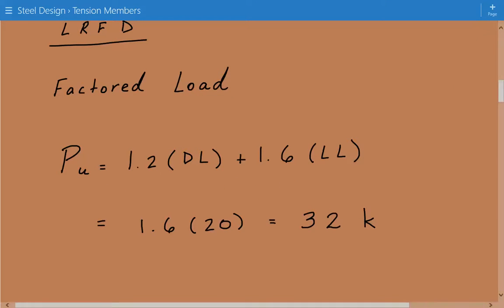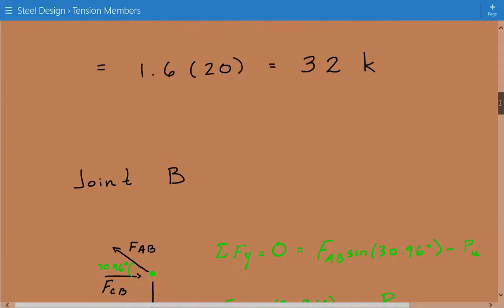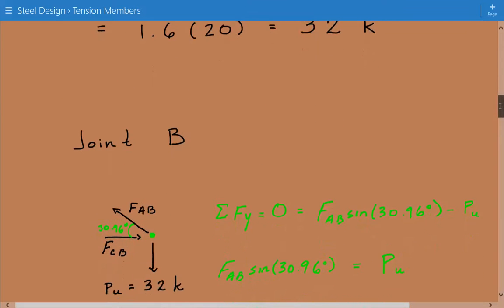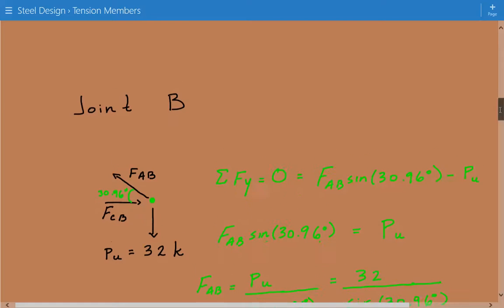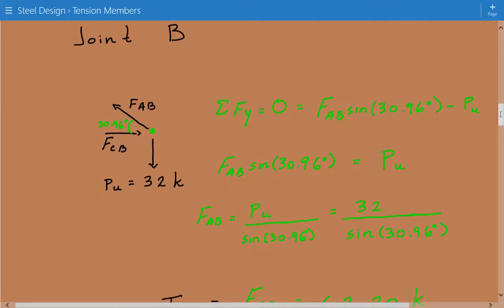So the next step is to find the tensile load in member AB, which is a member we're designing for. So to do that, we're going to isolate joint B and perform the method of joints on it. So here's our joint B. And if we sum the forces in the vertical direction,